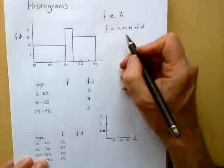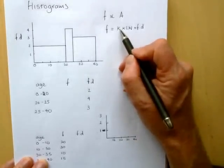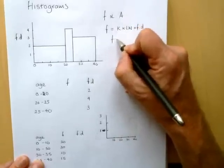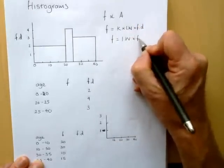Now, at GCSE, you can rest assured that k is always going to be 1. And so in virtually every example I've said, k is 1. So we can think of it as the frequency equals the interval width times the frequency density.